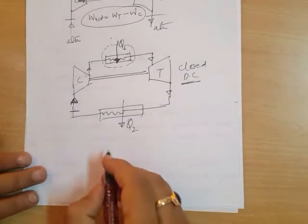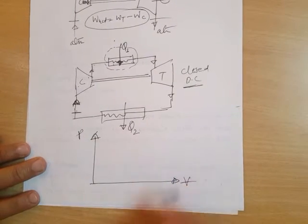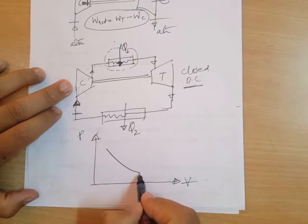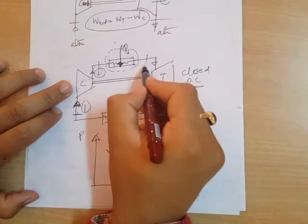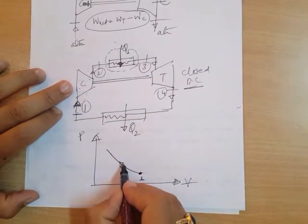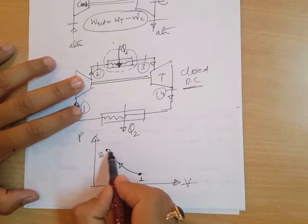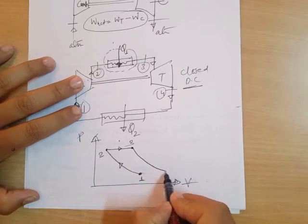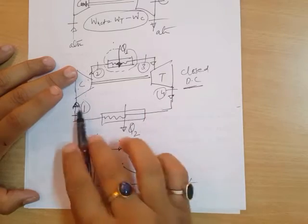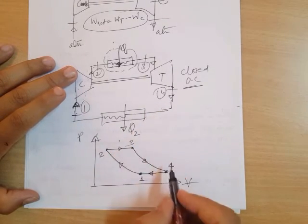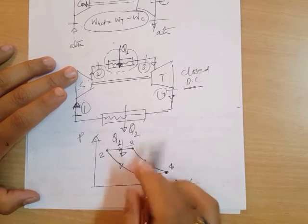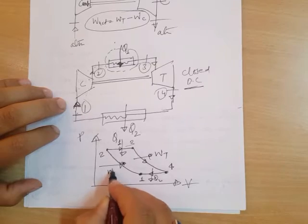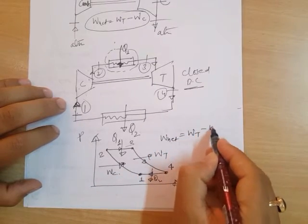The processes in the closed Brayton cycle are: process 1 to 2 — reversible adiabatic compression; process 2 to 3 — isobaric constant pressure heat addition; process 3 to 4 — reversible adiabatic expansion; and process 4 to 1 — isobaric heat rejection. The net work is turbine work (WT) minus compressor work (WC).